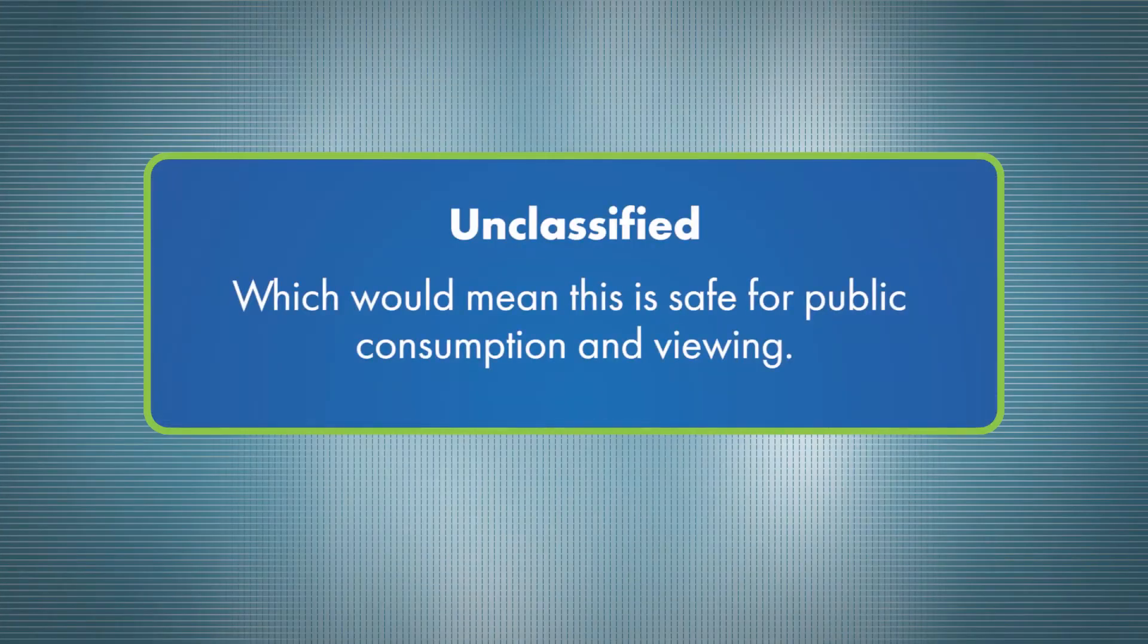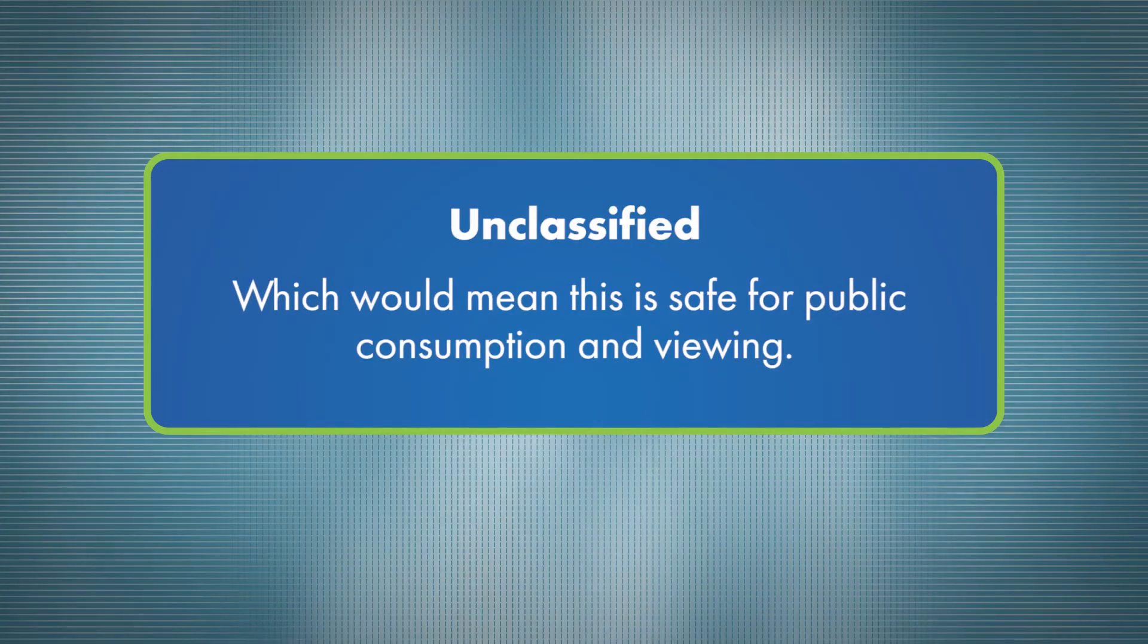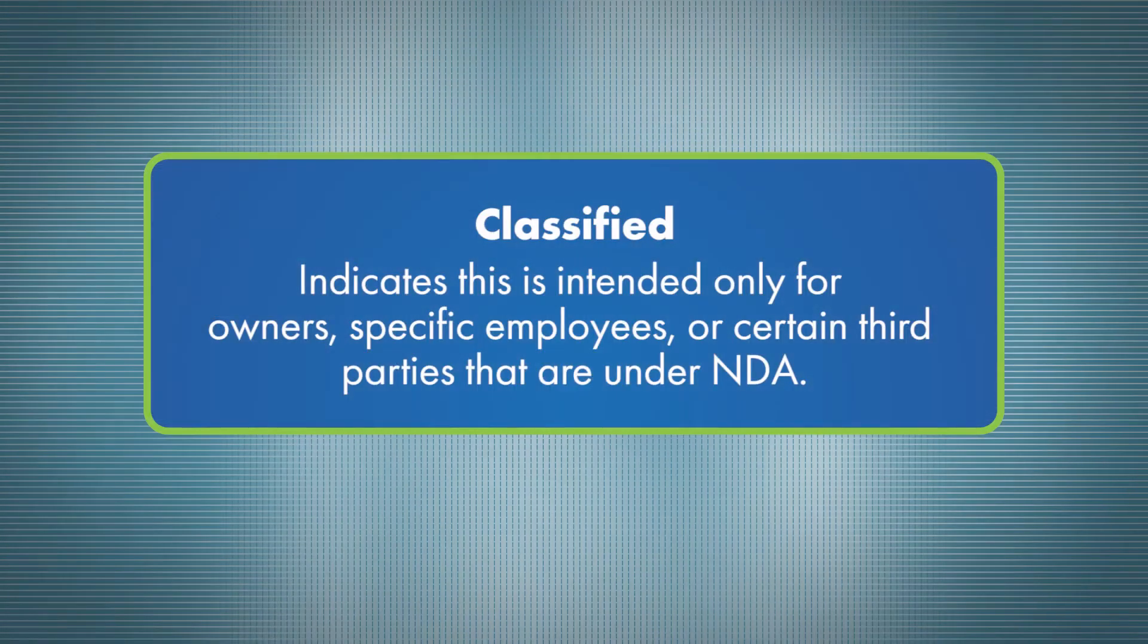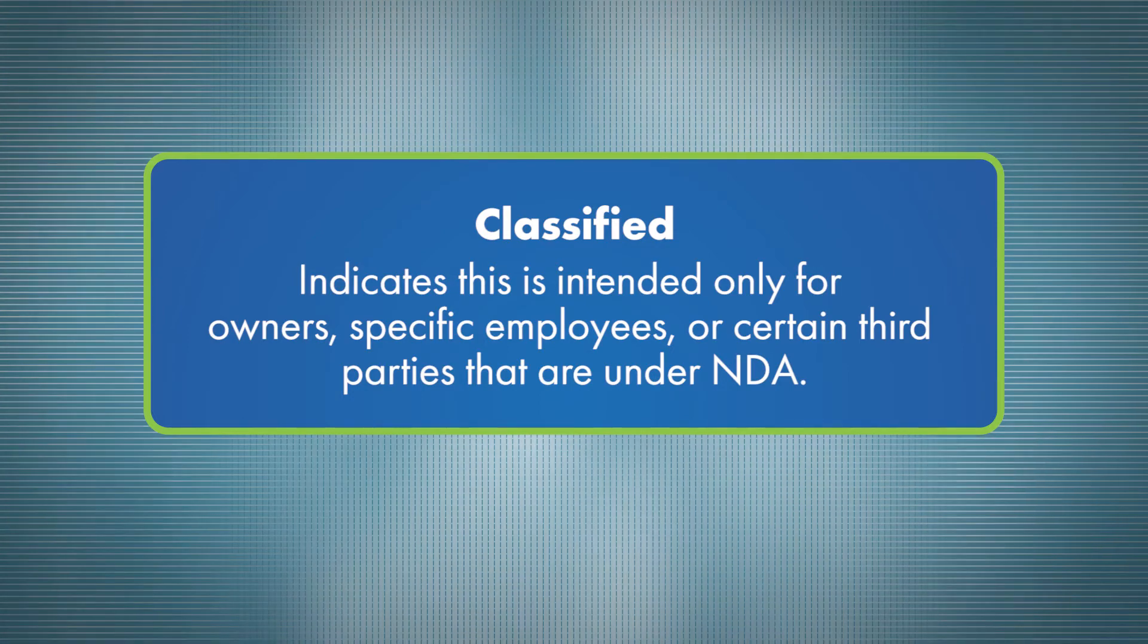Like a sliding scale, documents need to be classified based on just how confidential they are. Organizations sometimes follow military protocol when classifying documents as unclassified, which would mean it's safe for public consumption and viewing. Classified indicates that this is intended only for owners, specific employees, or certain third parties under an NDA.